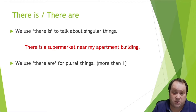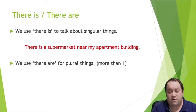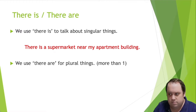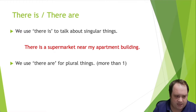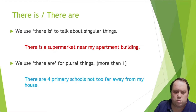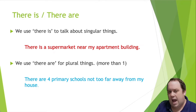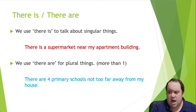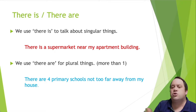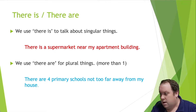Compared to that, we use 'there are' for plural things — more than one: two, three, four, etc. For example, 'there are four primary schools not too far away from my house.' For those unfamiliar with primary schools, they are elementary schools. In England we say primary schools.